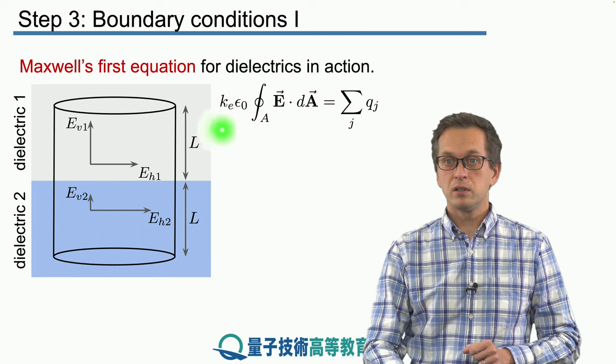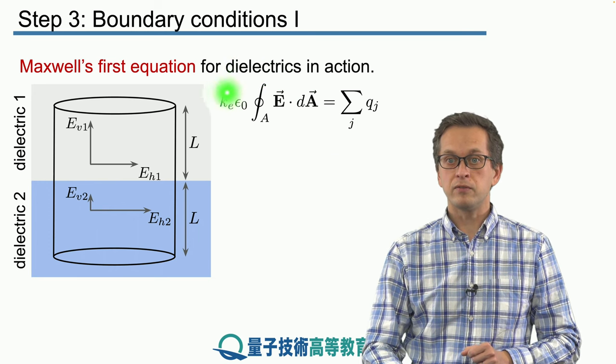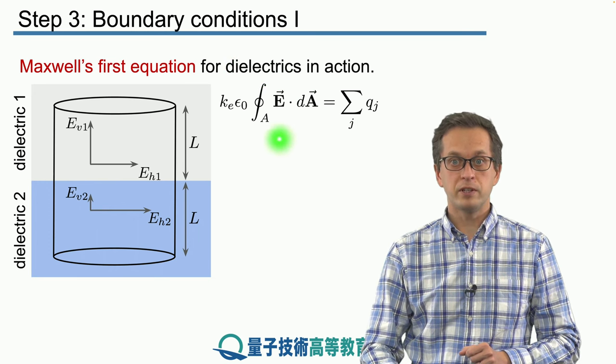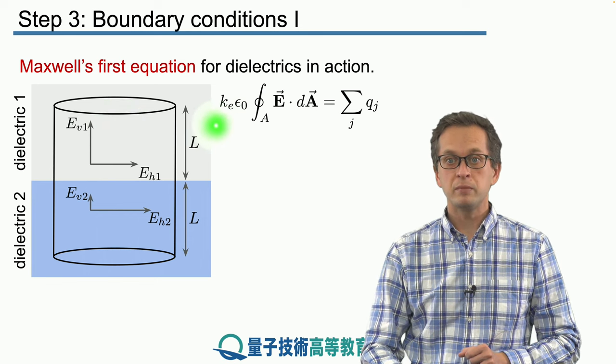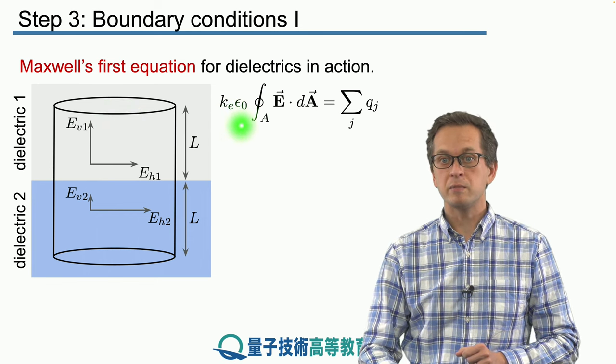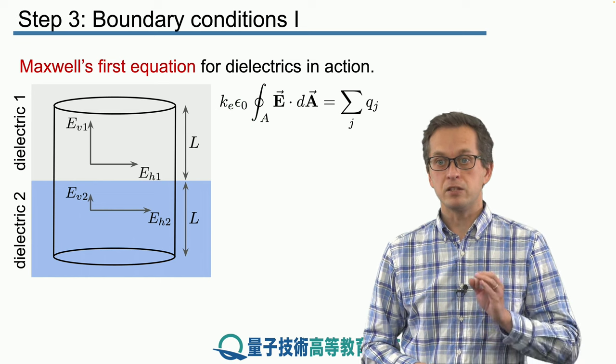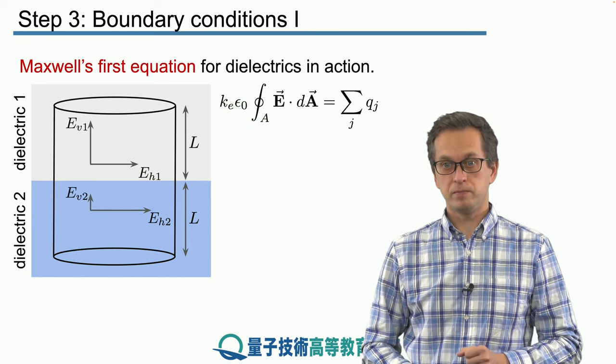Therefore, the total flux of the electric field through this cylindrical surface multiplied by Ke times epsilon naught is zero. So let's compute the flux.